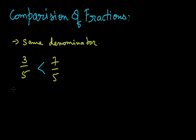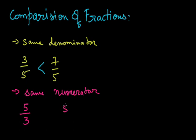In case we are having the same numerator, for example, if I am having a number 5 by 3 and another number 5 by 7. In this, I am having both the numerators same. Here, I will see that which denominator is smaller. Here, 3 is smaller. So this fraction will be greater than 5 by 7.